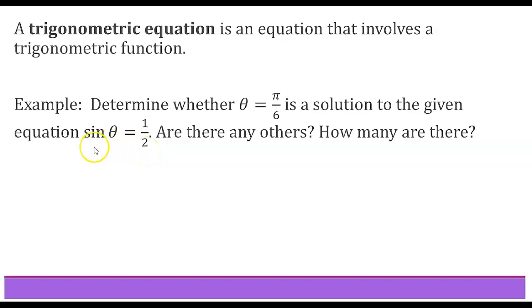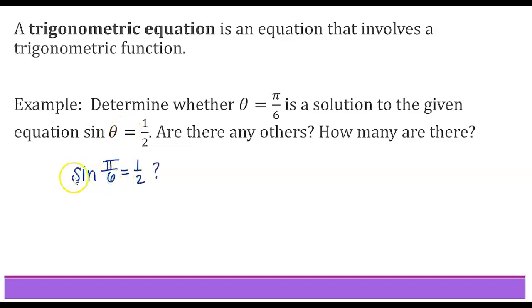When we have an equation we're looking for solutions, and on this first one we're simply asked to check or verify whether pi over 6 makes this equation true. We're going to start by substituting in pi over 6 for theta. So sine of pi over 6 — does that equal one half? When we plug in pi over 6 to sine we absolutely get out one half, so theta equals pi over 6 is a solution.